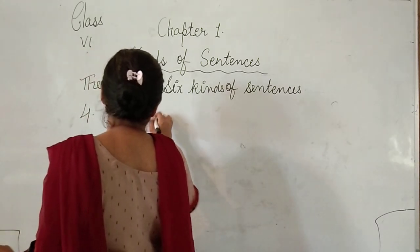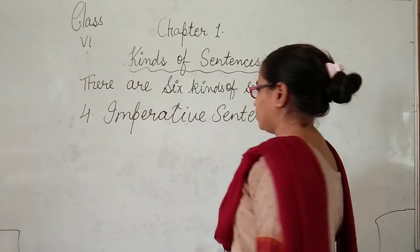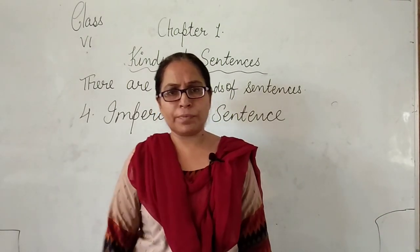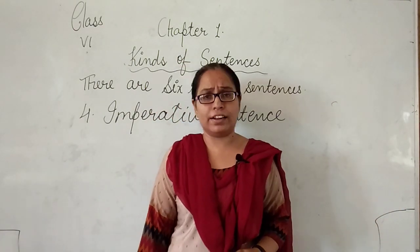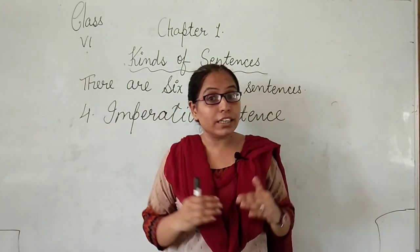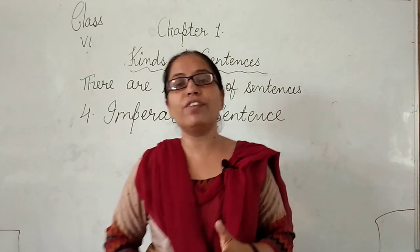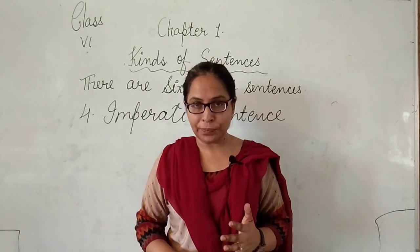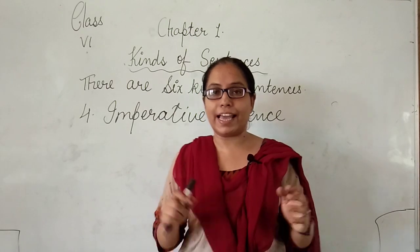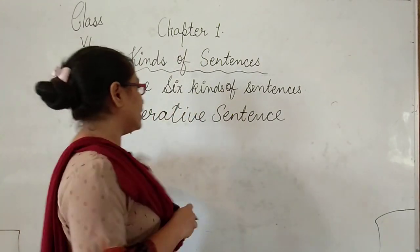The fourth type of sentence is the imperative sentence. Examples: 'Go out from my class. Bring one glass of water. Please give me your pen. Don't play on the road.' These are imperative sentences because they express order, command, suggestion, or request. When a sentence expresses any of these — order, command, request, or suggestion — it is called an imperative sentence.